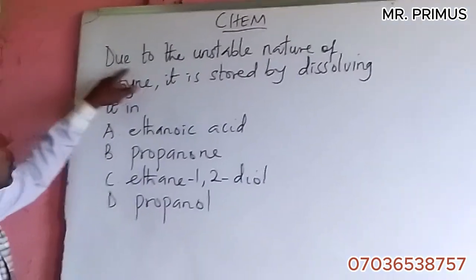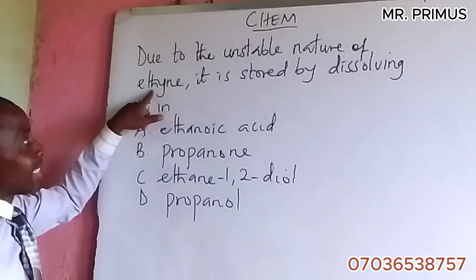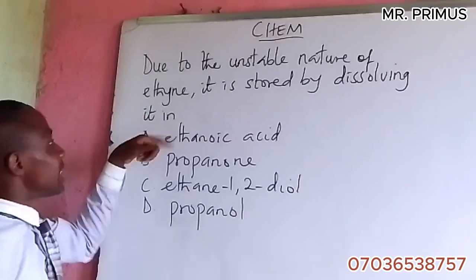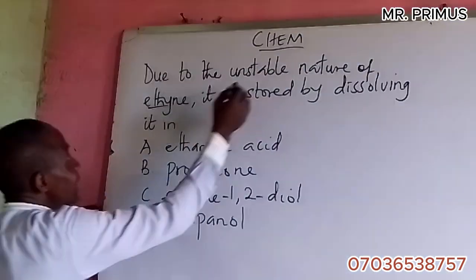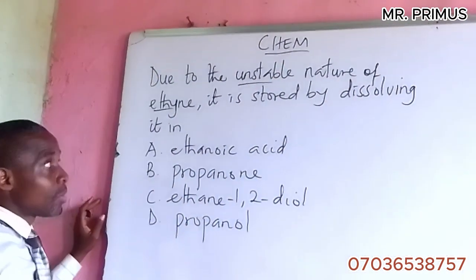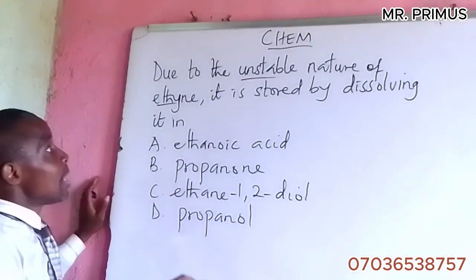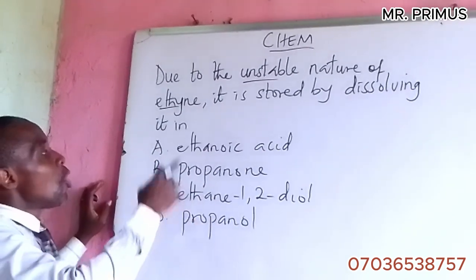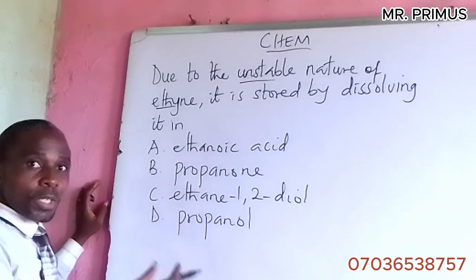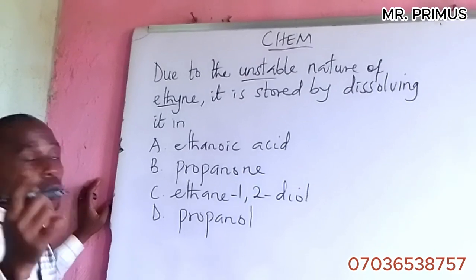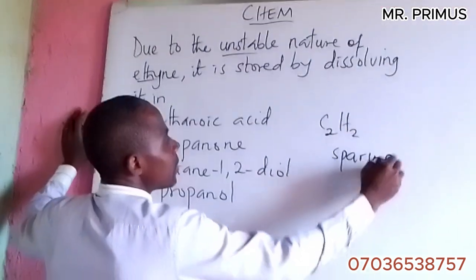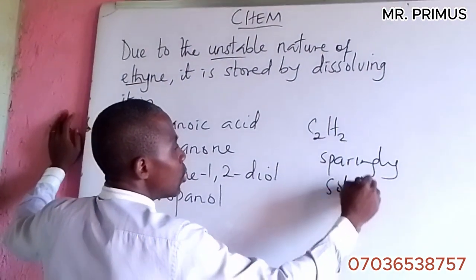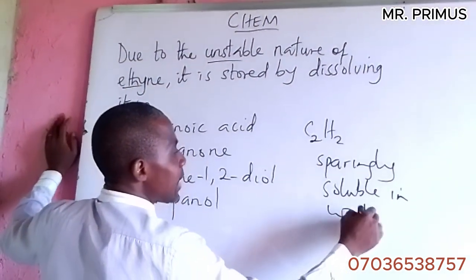Another question: Due to the unstable nature of ethyne, it is stored by dissolving it in what? Now you've learned something - ethyne is unstable. But because it's unstable, you need to store it properly.